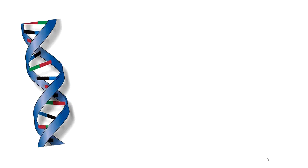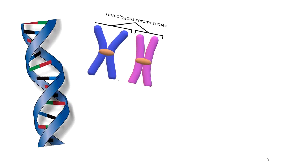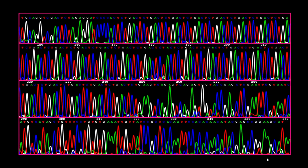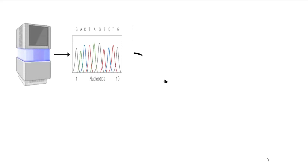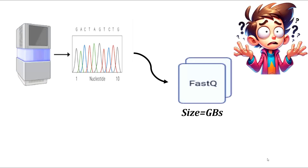As you know, DNA contains all of the information related to life. Through Next Generation Sequencing, we are going to decode that information. In NGS, all the information about the DNA is stored into one big file called the FastQ file. These FastQ files are so big that it would be quite difficult to analyze them.